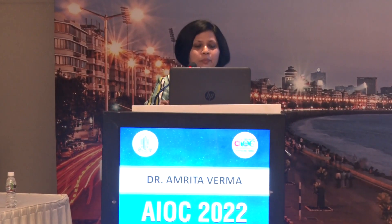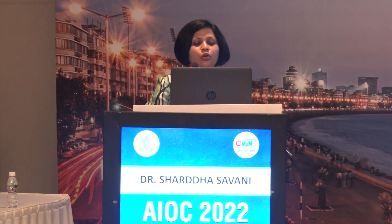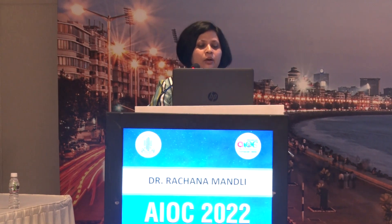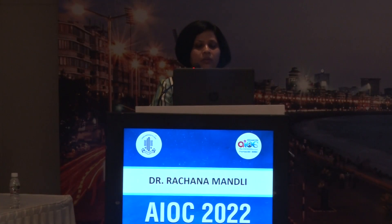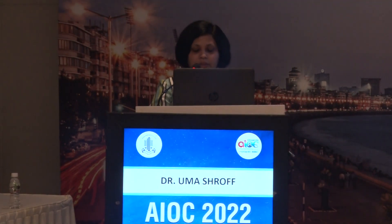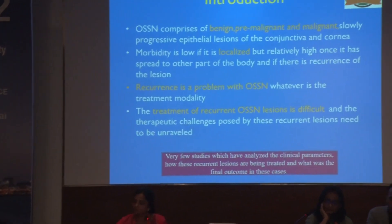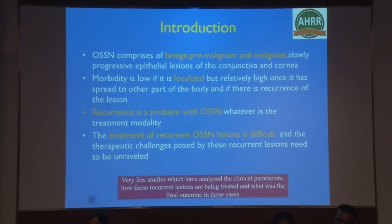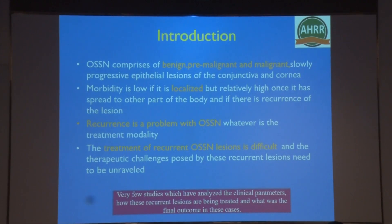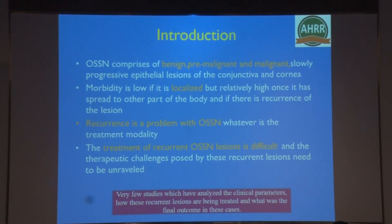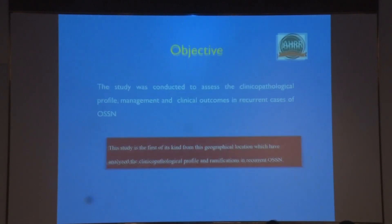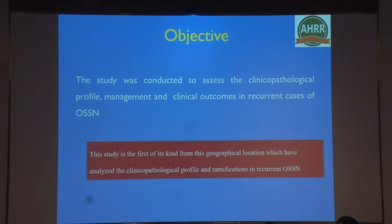Good afternoon. The paper I'm going to discuss today is 'Clinical Pathological Profile, Management, and Outcomes in Recurrent Cases of Ocular Surface Squamous Neoplasia' at a tertiary care center. OSSN is a common neoplasm of the ocular surface with significant morbidity. Recurrence is a problem whatever the treatment modality, and treatment is difficult. The challenges posed by these lesions need to be unraveled, and there are very few studies analyzing outcomes in these cases. This study was conducted to assess the clinical pathological profile and outcomes in recurrent cases of OSSN.